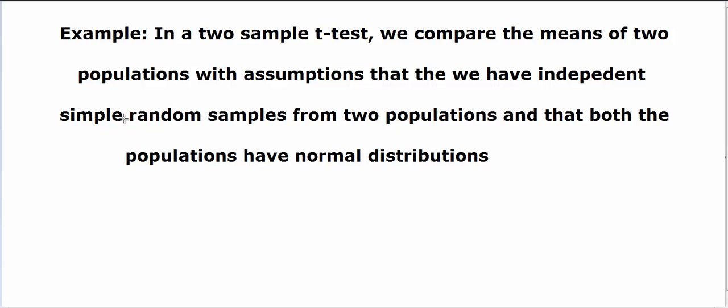So in this example, we are going to consider two sample tests, comparing two populations. So far when we were comparing the population means and we did not know the population standard deviation, we were using two sample t-tests, and the assumption was that we have independent random samples from the two populations, and both the populations have normal distributions.